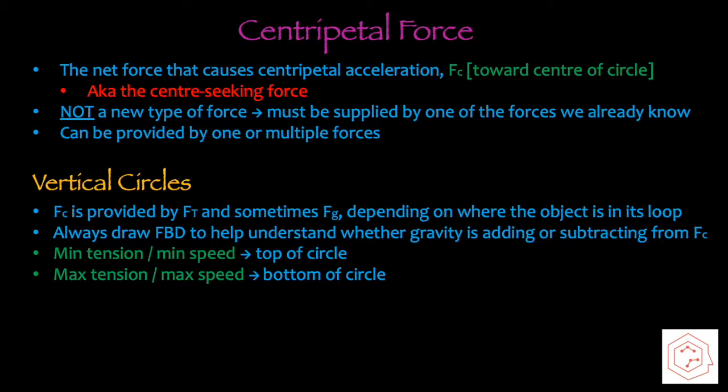Vertical circles are a section of this unit that many students find tricky, so here are some tips on how to approach those word problems. In a vertical circle, centripetal acceleration is provided by tension and sometimes gravity depending on where the object is in the loop. You always must draw out the free body diagram to help understand whether gravity is adding or subtracting from the centripetal force. Any time you're solving for a minimum — whether that's minimum tension, minimum speed, or any other minimum — the free body diagram would be the object at the top of the circle.